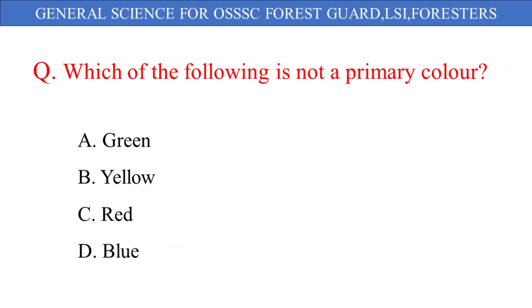Which of these is not a primary color? The given options are: A. Green, B. Yellow, C. Red, D. Blue. And the correct answer is option A: Green.